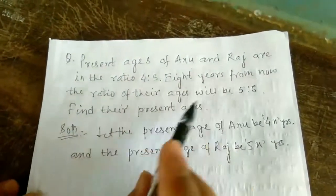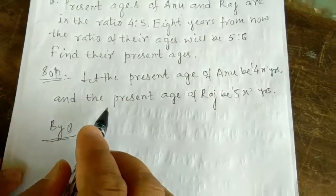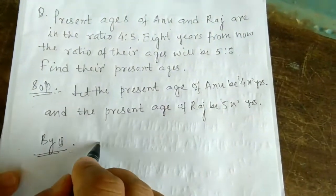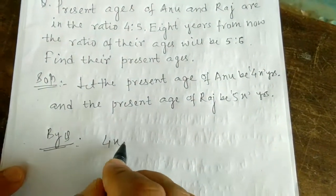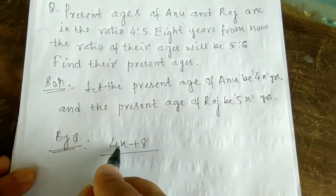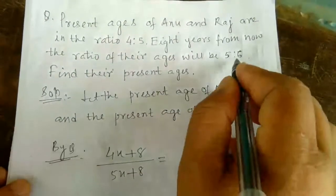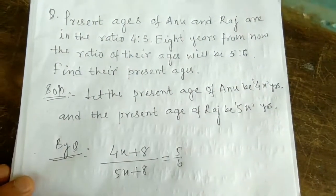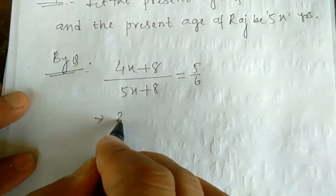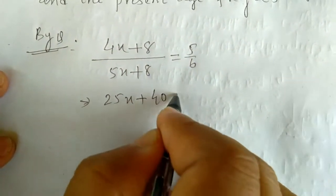It is given 8 years from now, so we add 8 to both ages. After 8 years: (4x + 8) by (5x + 8). The ratio of their ages is given as 5 is to 6. So (4x + 8) / (5x + 8) = 5/6.